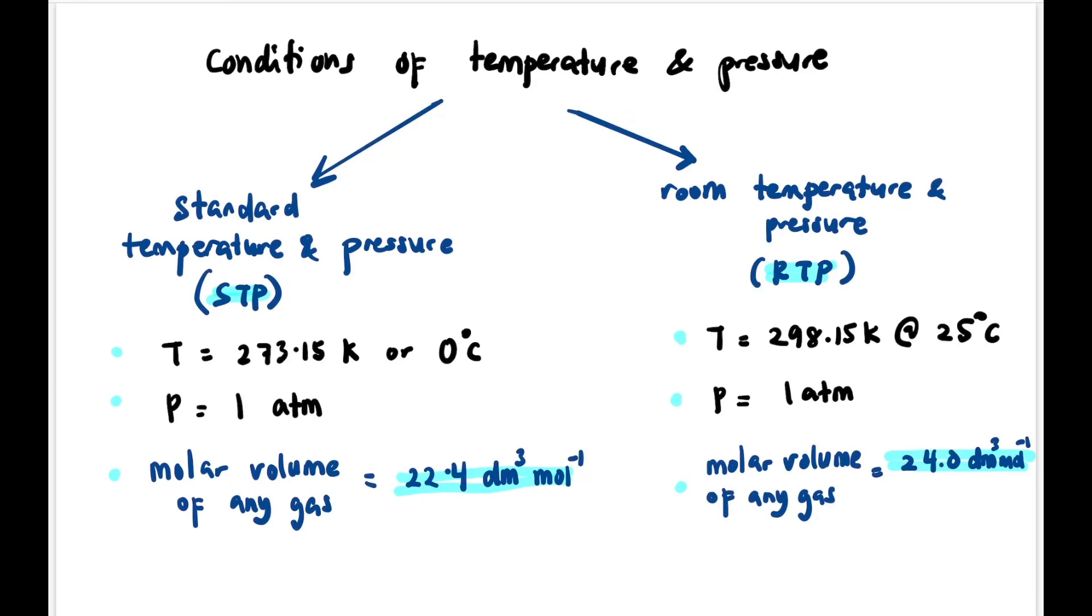The conditions of temperature and pressure can be classified into two: Standard Temperature and Pressure (STP) and Room Temperature and Pressure (RTP). At STP, temperature is 273.15 K and pressure is 1 atm. Meanwhile, for RTP, it's 298.15 K and 1 atm. At STP, the molar volume of any gas is 22.4 dm³/mol, while at RTP it's 24.0 dm³/mol.